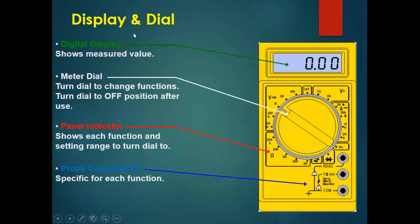The green line shows the digital display, which is an alphanumeric LCD on which the measured value is shown. The white line shows the meter dial, which is used to change the range or function. The panel indicator shows the range of any function, and the blue line shows the probe connection ports for the red and black leads.